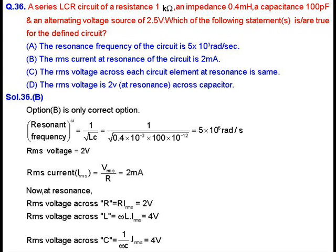MTP3 Question number 36: A series LCR circuit has resistance 1 kilohm, inductance 0.4 millihenry, and capacitance 100 picofarad, with an alternating voltage source of 2.5 volts. We have been asked to find which of the following statements is or are true for the circuit — the resonance frequency, the RMS current at resonance, the RMS voltage across each element at resonance, and the RMS voltage across the capacitor.